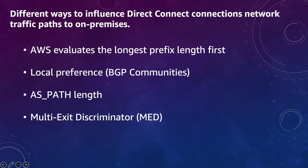Second, you can use BGP communities. AWS provides some BGP communities which you can use to make one connection primary and give another one lower preference. Third, you can use AS path, and the fourth one is MED. AWS evaluates your traffic in that same order: first longest prefix, then BGP communities if prefix length is the same, then AS path, and finally MED.